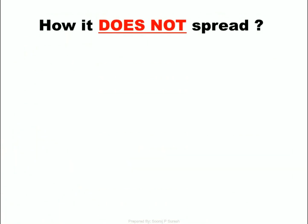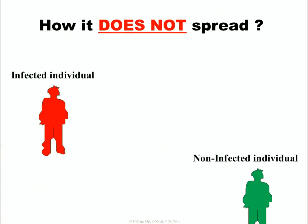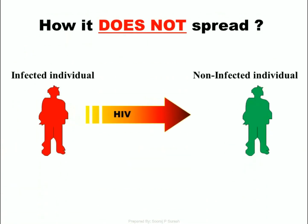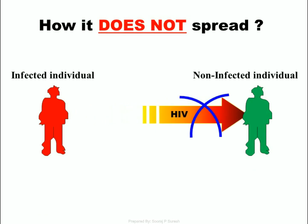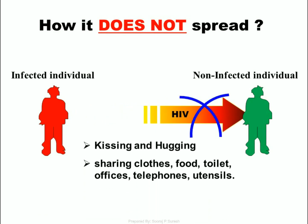How HIV does not spread: An HIV-infected person will not transmit HIV infection through kissing and hugging, sharing clothes, food, toilet, offices, telephones, or utensils, and insect bites.